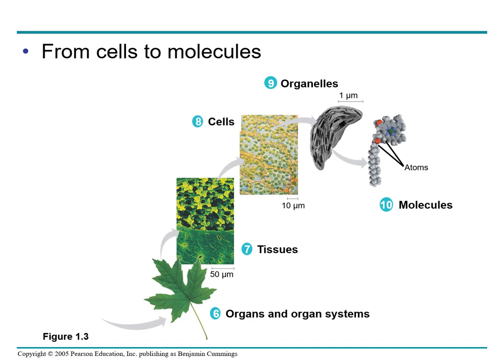Lastly, on number 10, we have molecules. A molecule is a chemical structure consisting of two or more units called atoms, represented as balls in this computer graphic of the chlorophyll molecule. Chlorophyll is the pigment that makes a leaf green and it absorbs sunlight during photosynthesis. Within each chloroplast, millions of chlorophyll molecules are organized into a system that converts light energy to the chemical energy of food. So in the hierarchy of life, starting from the biosphere, we have ecosystem, communities, population, organisms, organ, tissue, organelles, cells, and lastly molecules.